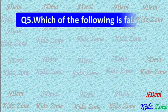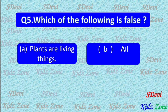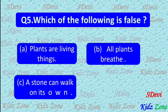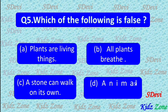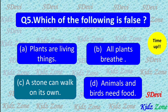Question number 5. Which of the following is false? A. Plants are living things. B. All plants breathe. C. A stone can walk on its own. D. Animals and birds need food. The correct answer is C. A stone can walk on its own.